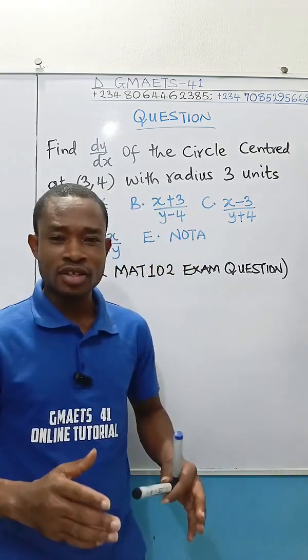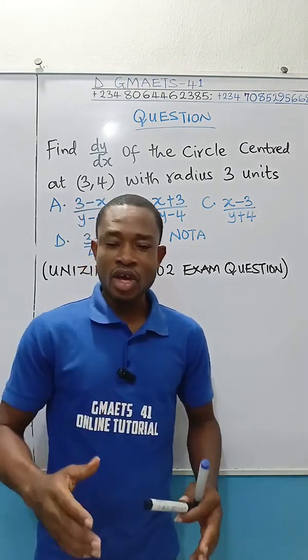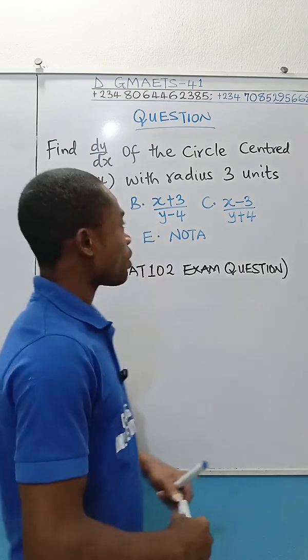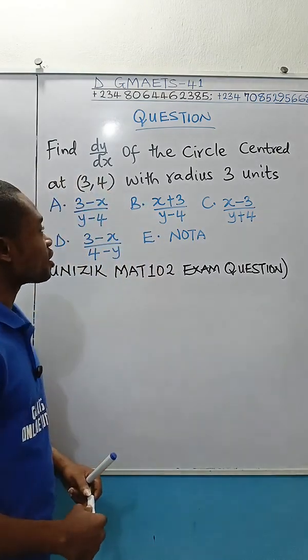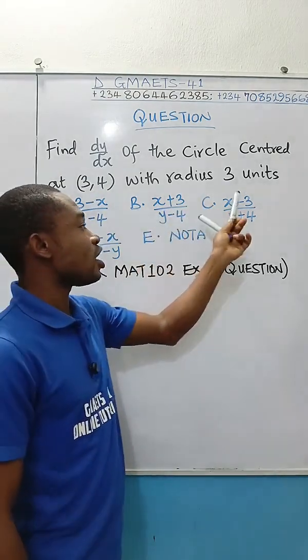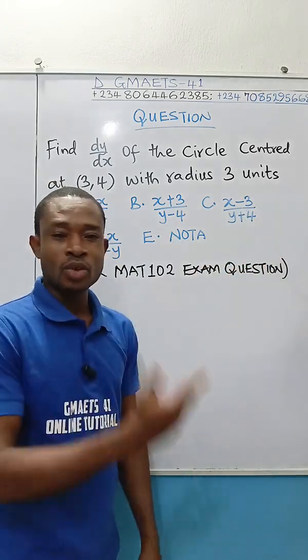Here on the board we've got this UNIZIK exam question. We're going to deal with this mathematics problem. Find dy/dx of the circle centered at (3,4) with radius 3 units. We've got the options here.